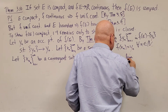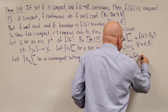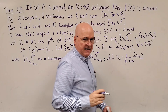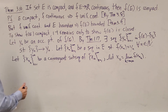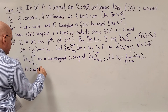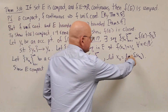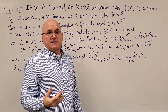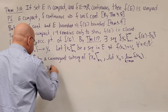Since {Xₙₖ} is convergent, let X₀ be its limit — that is, the limit as K goes to infinity of Xₙₖ. Since E is compact (compact implies closed and bounded, so it contains all its accumulation points), X₀ is in E. This is justified by the preceding lemma: since E is compact, X₀ is in E.